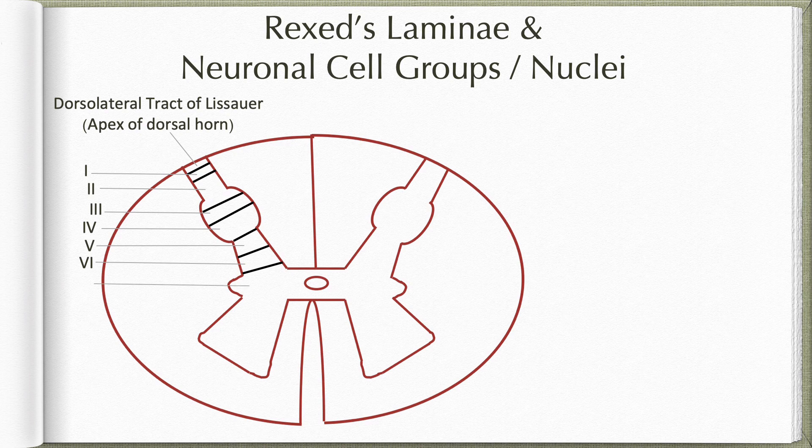Lamina 7 occupies the intermediate horn region. It has rich connections with the midbrain and cerebellum through spinocerebellar tracts, spinotectal tracts, or descending tectospinal and rubrospinal tracts. It is involved in posture and movement, and in the case of thoracic and second, third and fourth sacral segments it is also involved in autonomic functions.